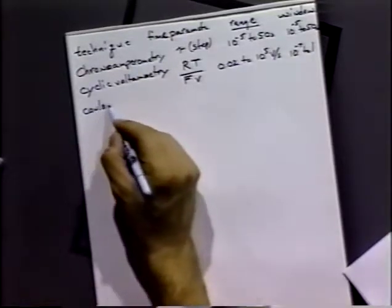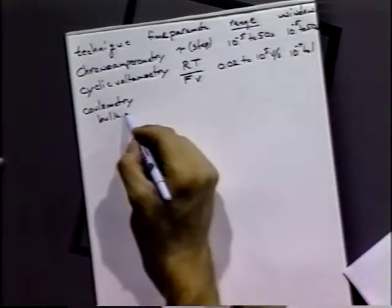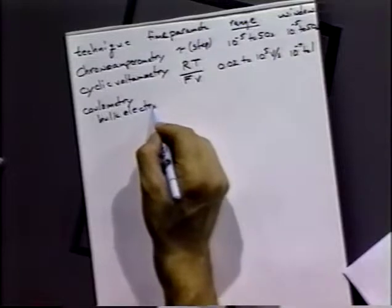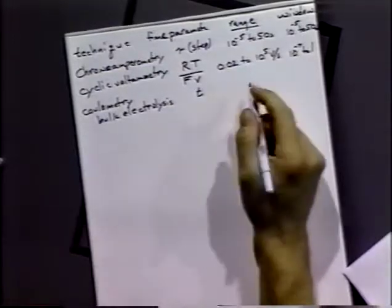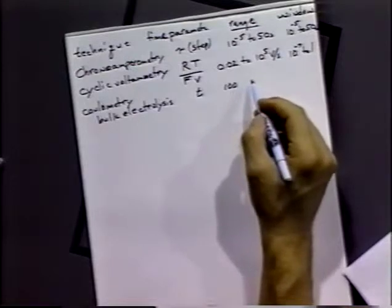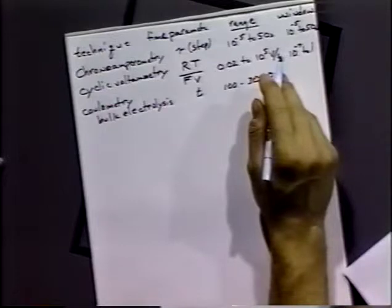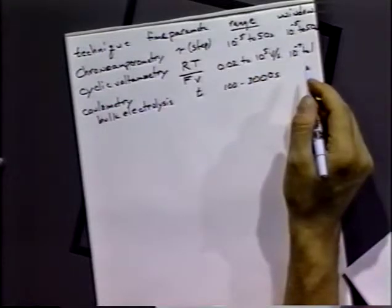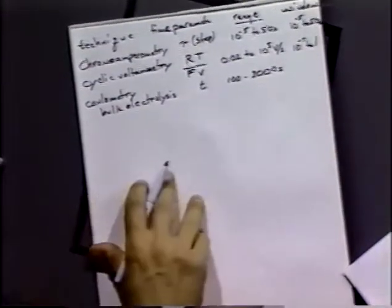Coulometry or bulk electrolysis. Remember, here we're going to probably be stirring the solution so we won't have to worry about convective effects. In fact, we're relying on them. And that would basically be the time that we do the bulk electrolysis. And it depends on your patience. So let's say 100 to 3,000 seconds would be your time window or the range of time scales.